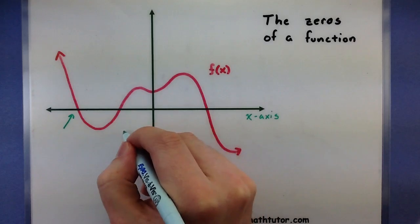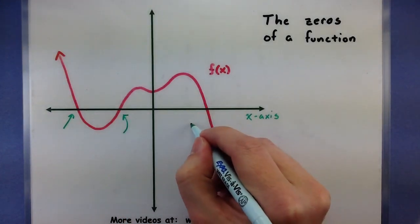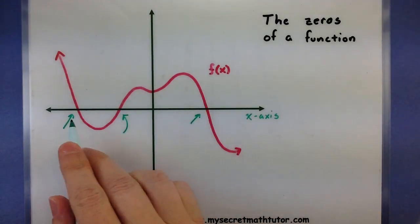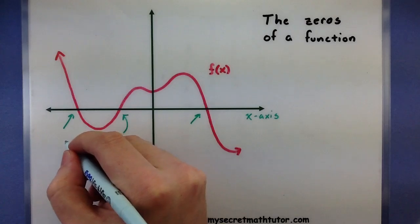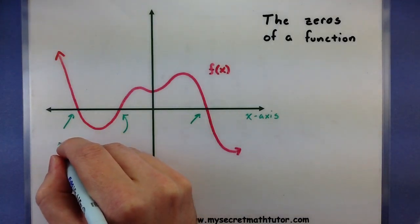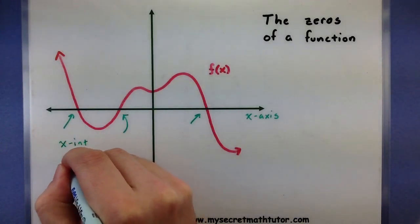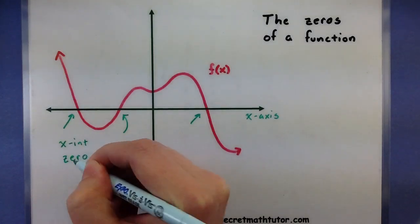It crosses it here, here, and one more time over here. All three of these spots, wherever they're located, I could call them my x-intercepts, or I could call them my zeros of the function.